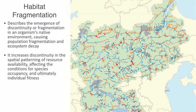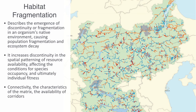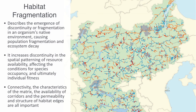This graphic of the river network in part of Denmark illustrates anthropogenic fragmentation along the country's waterways, where every red dot indicates a physical barrier to fish migration such as a dam. Connectivity among fragments, characteristics of the matrix, availability of corridors for movement between fragments, and the permeability and structure of habitat edges are all important and affect the structure, persistence, and strength of the ecological network.